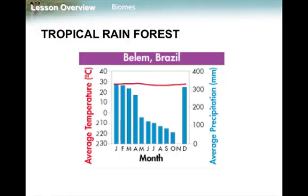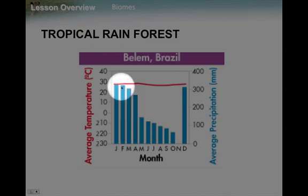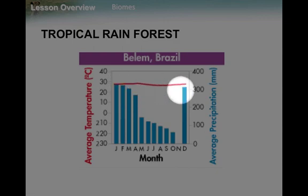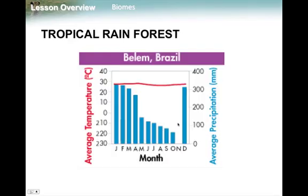The reason we call it a rainforest is because of the large amount of rain it's getting. In December through April, it's getting right around 300 millimeters of rain each month. Those are really large amounts of rain. In fact, it'll get more rain in one of these months than some areas get all year long. That's why it's called a tropical rainforest.